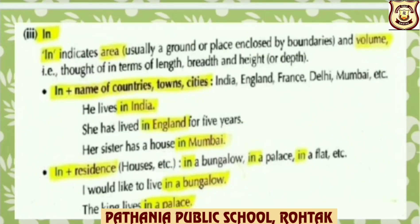Now, let us discuss where to use 'in' as preposition of place. In indicates area, usually a ground or place enclosed by boundaries, and volume that is thought of in terms of length, breadth and height or depth. In plus name of countries, towns, cities — such as India, England, France, Delhi, Mumbai, etc. For example: He lives in India. Here, preposition 'in' and name of the country, India.